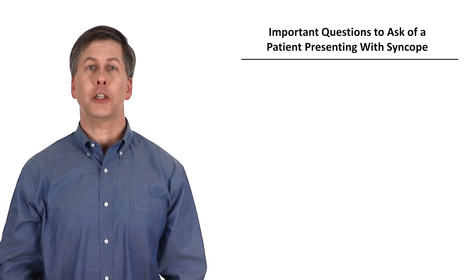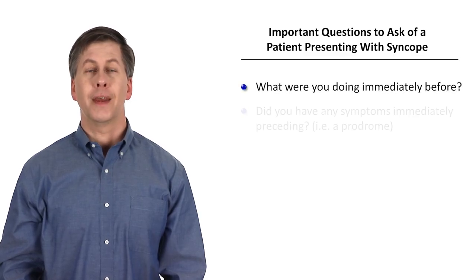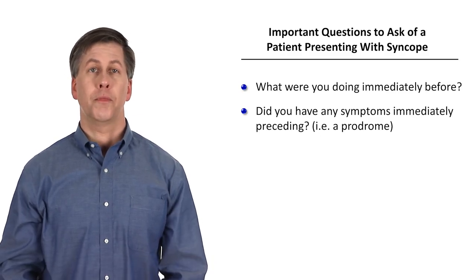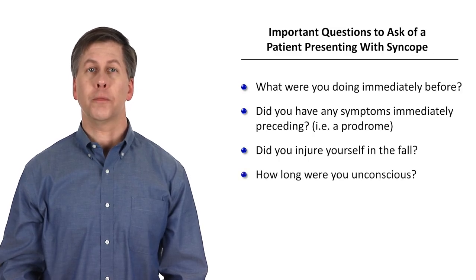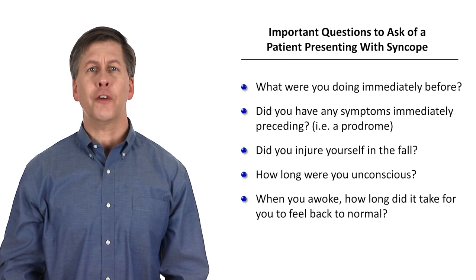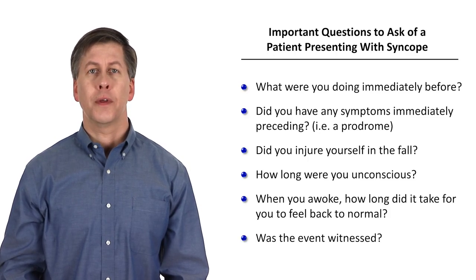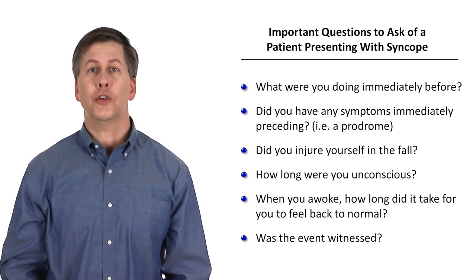I'll now talk about the assessment of an individual patient presenting with possible syncope. Where do we start? The most important questions to ask a patient who has syncopized are: what were you doing immediately before you passed out? Did you have any symptoms immediately preceding it? That is, was there a prodrome? Did you injure yourself in the fall? Do you know how long you were unconscious for? When you awoke, how long did it take for you to feel more or less back to normal? And was the event witnessed by anyone? Because the patient themselves cannot be relied on for an accurate answer to those last two questions.